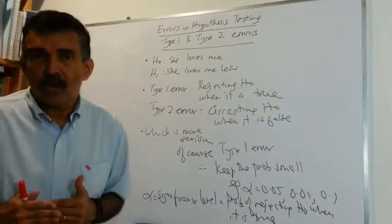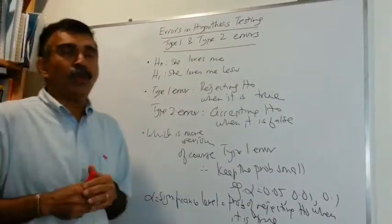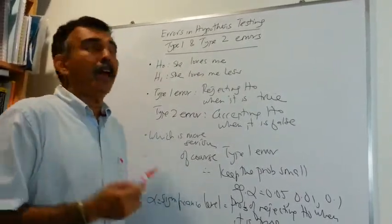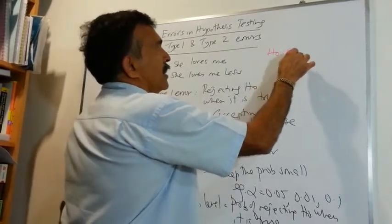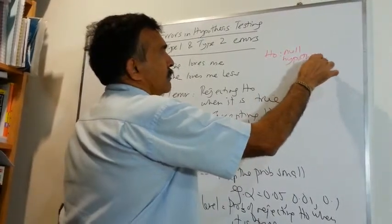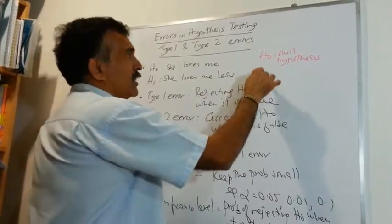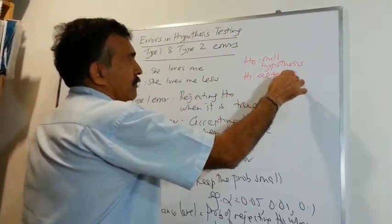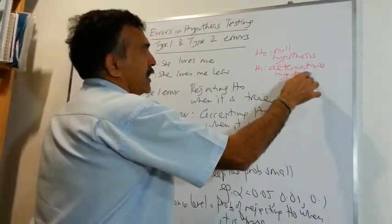Now, in hypothesis testing, we have something called H0. What is H0? H0 is known as the null hypothesis. H1 is known as the alternative hypothesis.